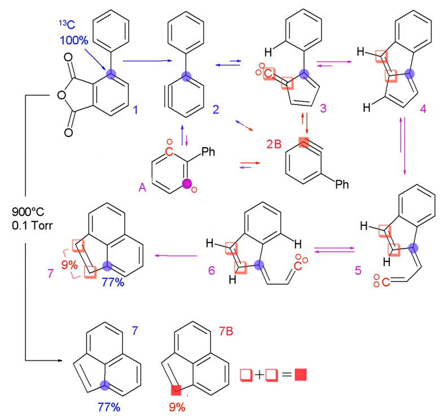Isotopic labeling is a technique used to track the passage of an isotope — an atom with a detectable variation in neutron count — through a reaction, metabolic pathway, or cell.